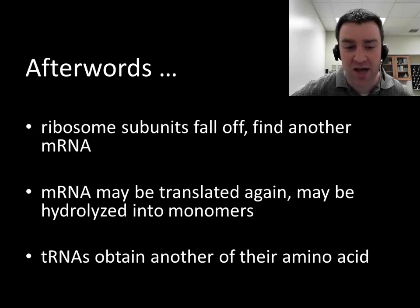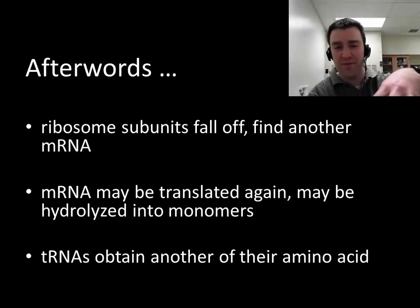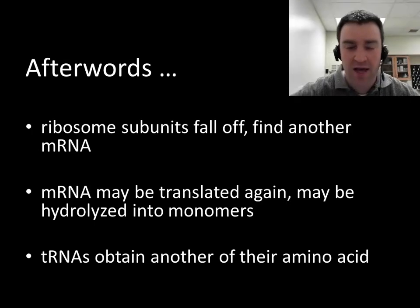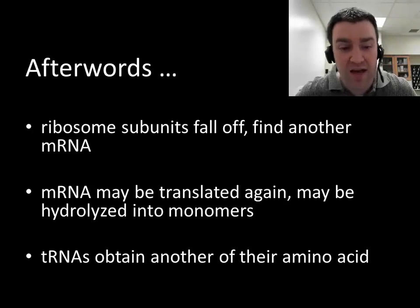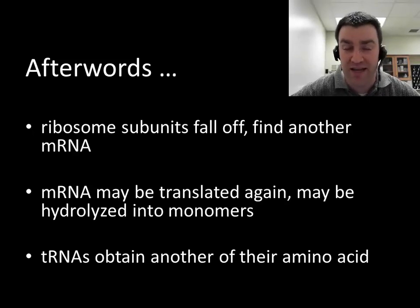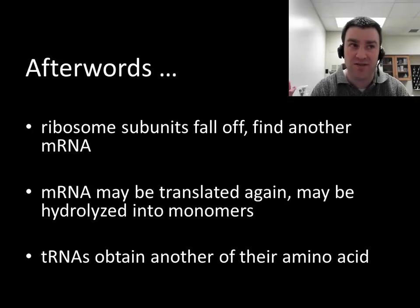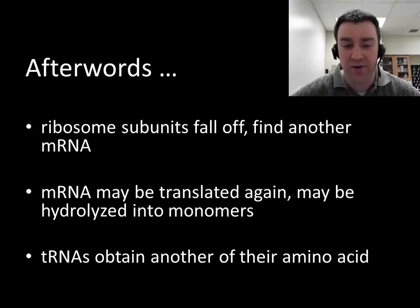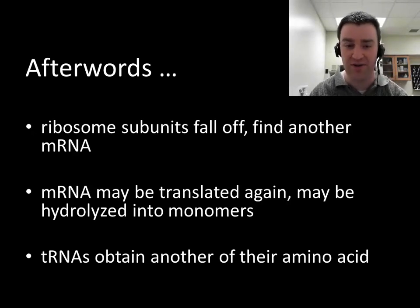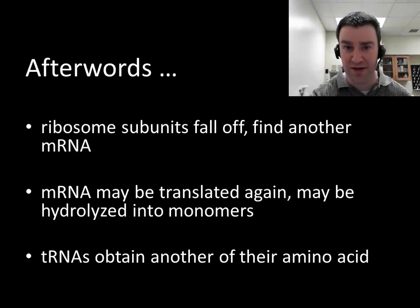After translation, the ribosome subunits separate into two pieces again and can be recycled — they might go find another messenger RNA and start constructing a polypeptide there. Messenger RNA itself might also be recycled and translated multiple times, or in other cases it might only be translated a few times before being broken down into RNA nucleotides. Transfer RNAs can also go into the cytoplasm, pick up another of their particular amino acid, and be recycled as well.